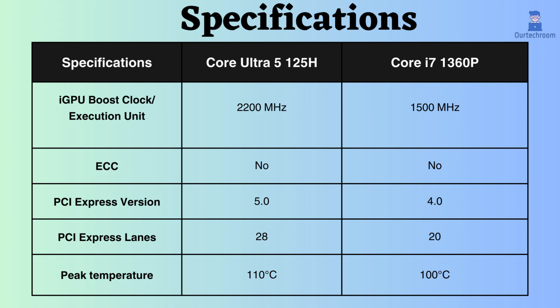The Core Ultra supports PCI version 5, while the Core i7-1360P supports PCI version 4. Also, the number of PCI lanes supported by the Ultra is greater, so more external devices can be connected to a laptop or computer with the Core Ultra 125H.